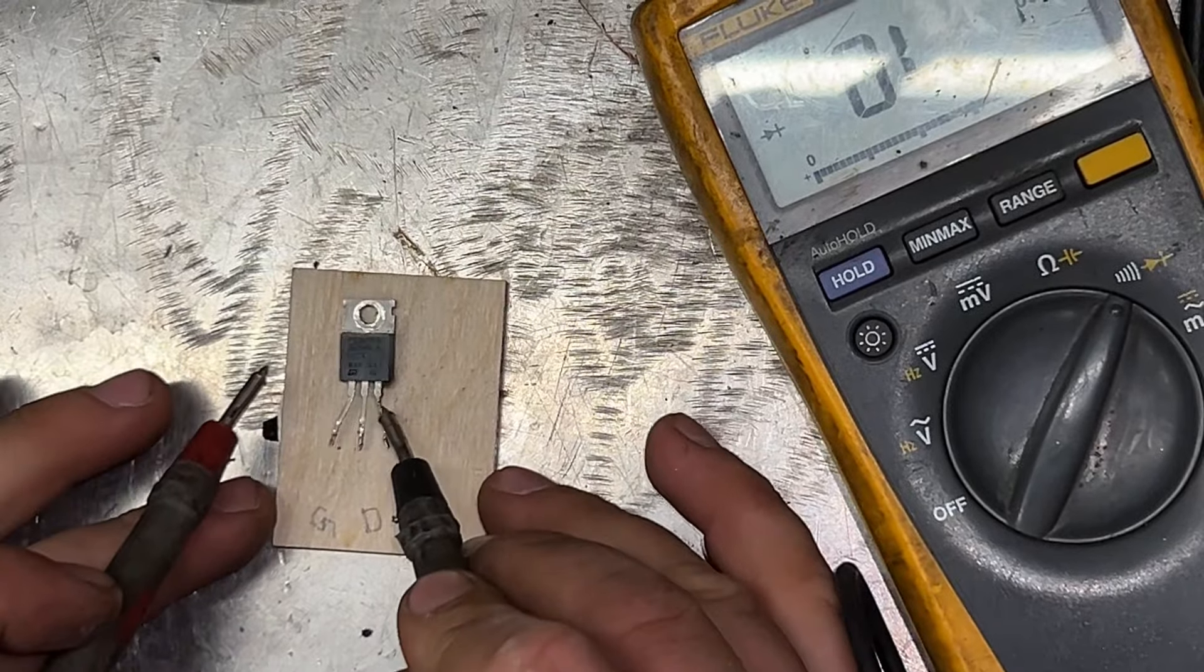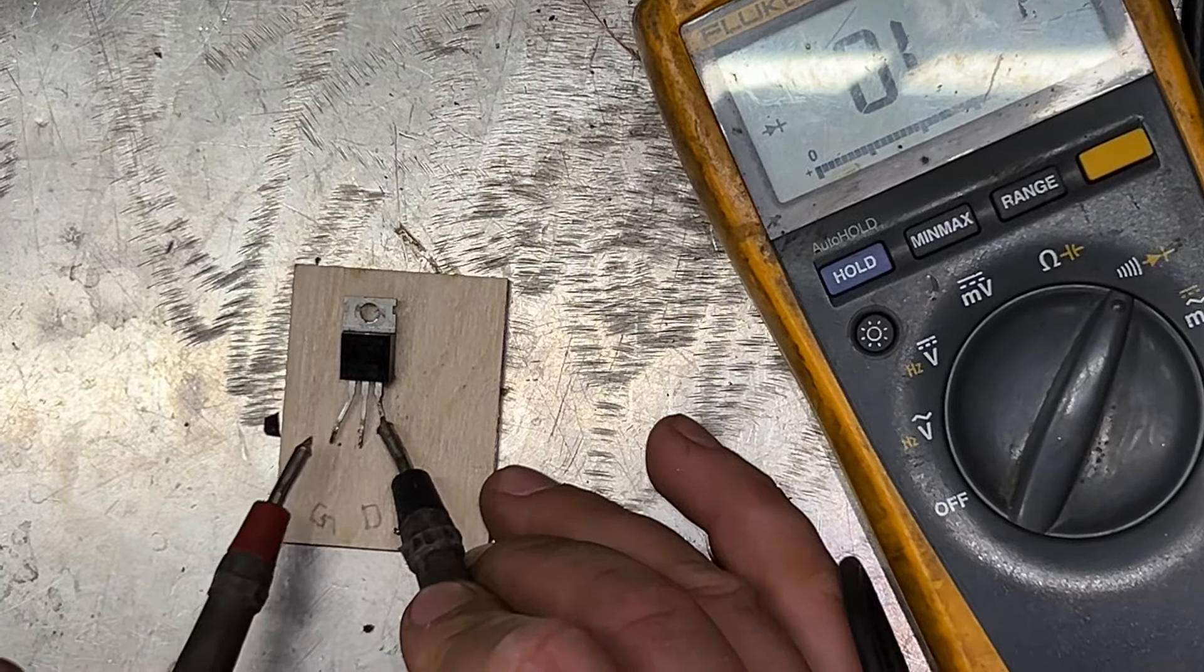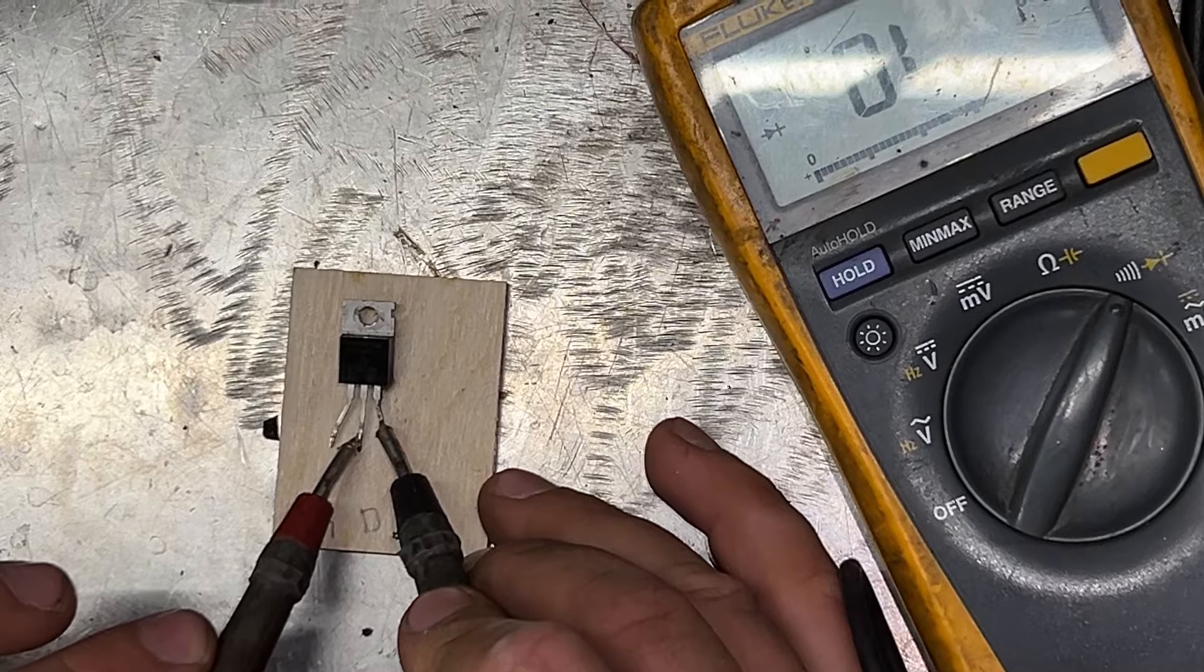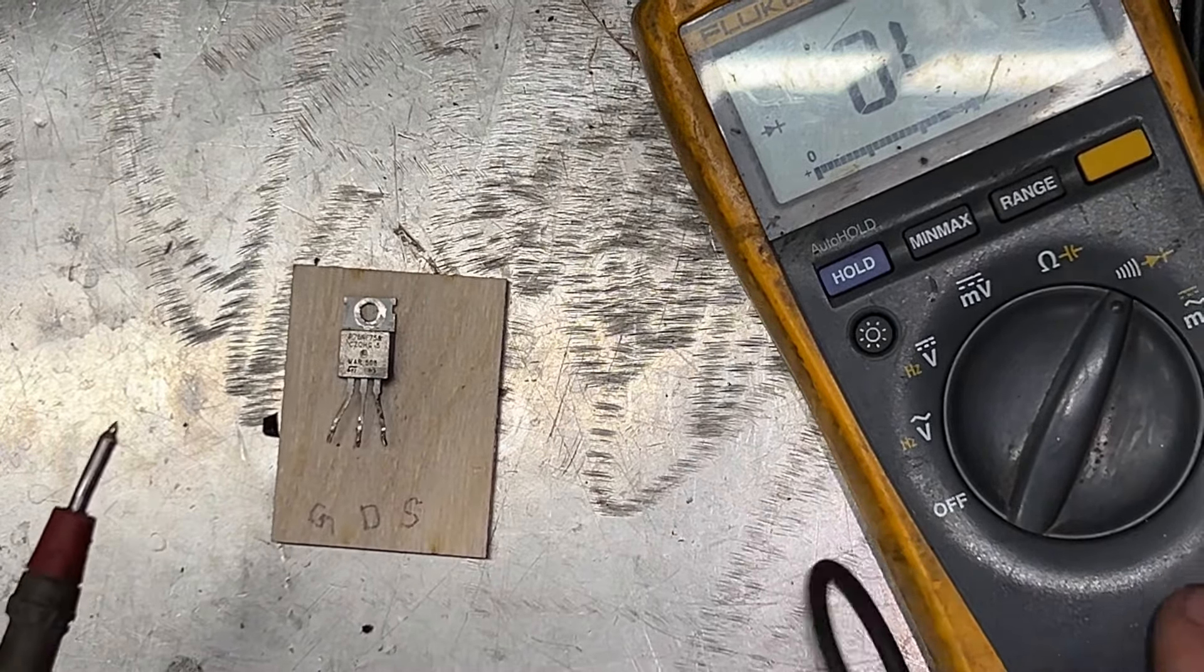Put the black probe onto the source and then the red onto the drain. Make sure you don't touch the gate. Nothing, it's not beeping. That's very good. This means that it's not shorted.